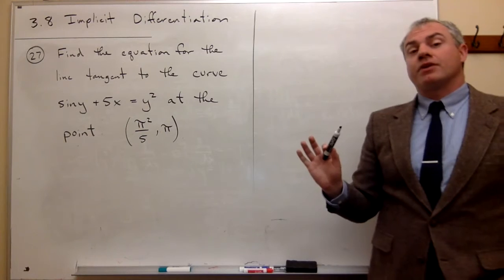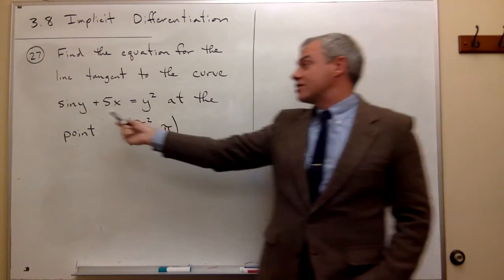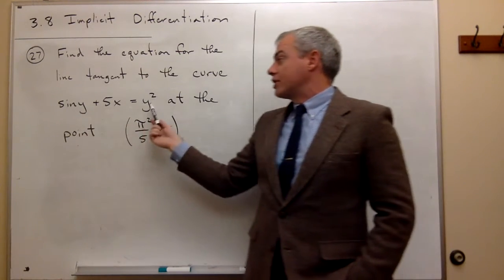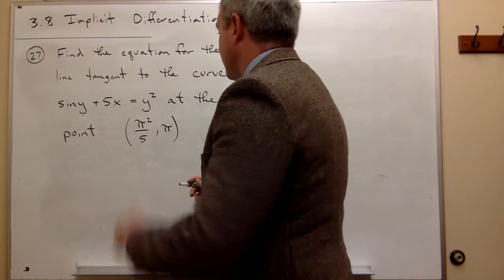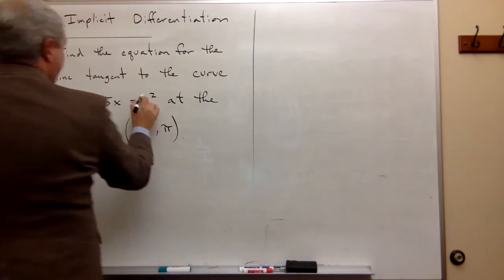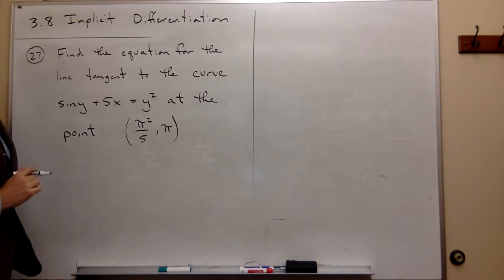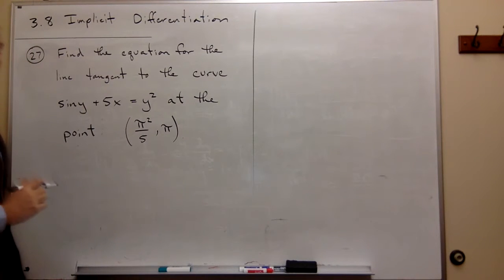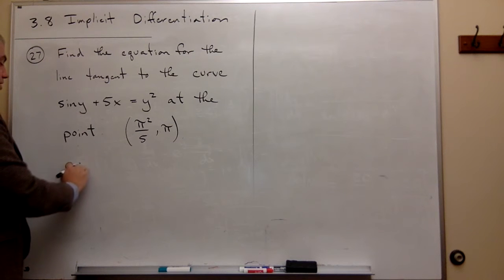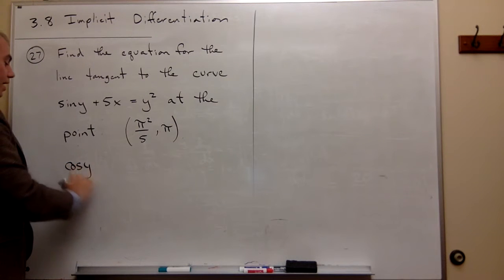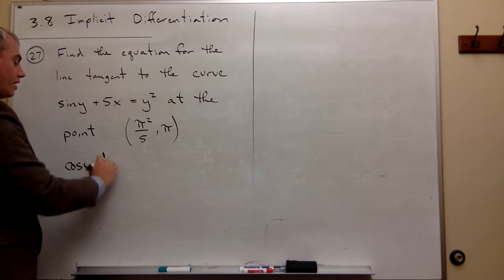So the very first thing we need is to find dy/dx for this curve. Let's start by taking the derivative of each of these pieces implicitly. If I take the derivative of sine of y, I get cosine of y times the derivative of y, which is dy/dx.